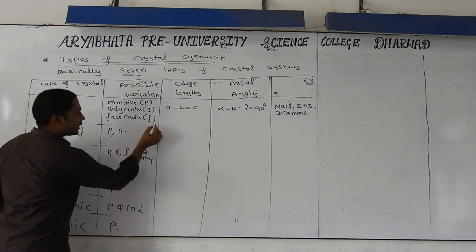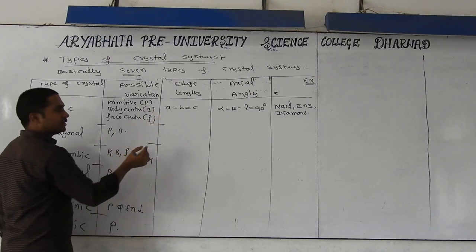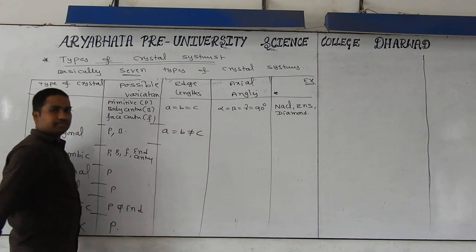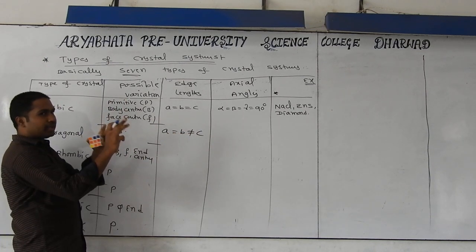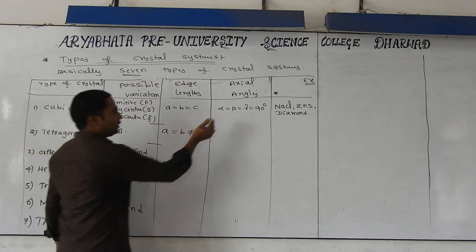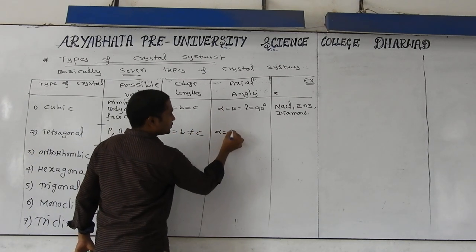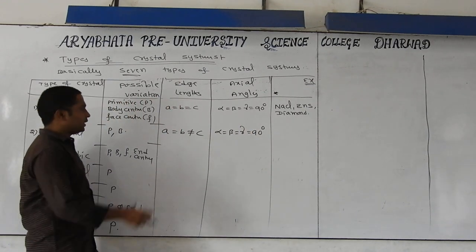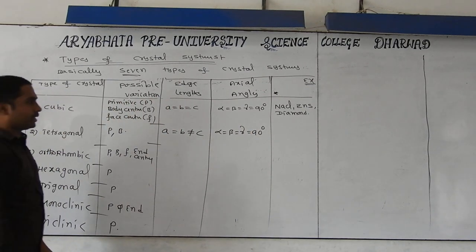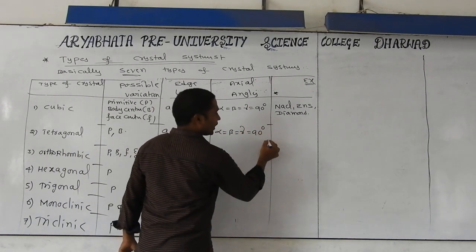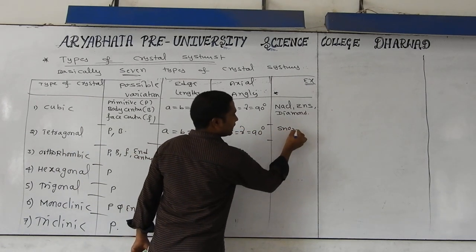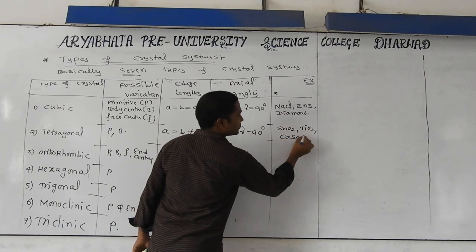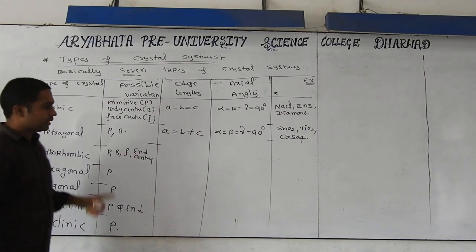For tetragonal: edge length relation is a = b, but not equal to c — any two lengths may be equal but the third length may be different. Angles: alpha = beta = gamma = 90 degrees only. The resulting shape is called tetragonal. Under tetragonal, examples are tin oxide, titanium oxide, and calcium sulfate — those crystals come under tetragonal.